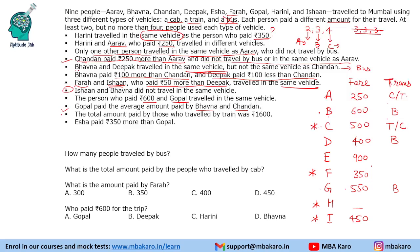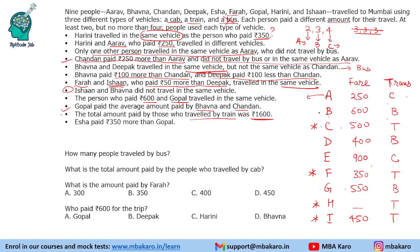The total amount paid by those who travelled by train is 1600. Arav is travelling by cab or train — if Arav is by train, he paid 250, and the other person would need to pay 1350, which is not possible. So Arav is travelling by cab, and Chandan's group is travelling by train. The four train travellers paid 500 + 350 + 450 + Harini's amount = 1600. That gives Harini paid 300 rupees.